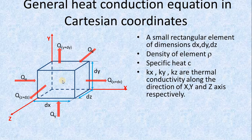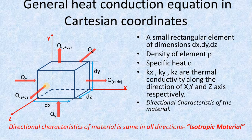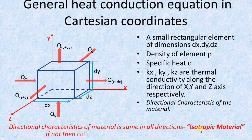Now, let's say the density of this element is rho, the specific heat is C, and Kx, Ky, Kz are the thermal conductivities along the x, y, and z directions respectively. So for this element, we have considered directional thermal conductivities. If thermal conductivity is the same in all directions, we call that material isotropic. If not, we call it anisotropic. Currently, we have considered anisotropic material.